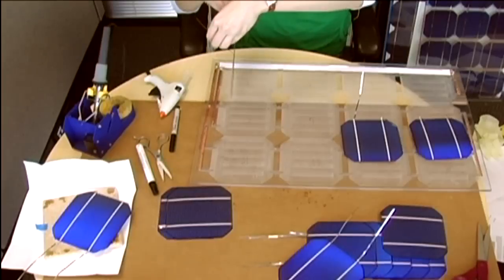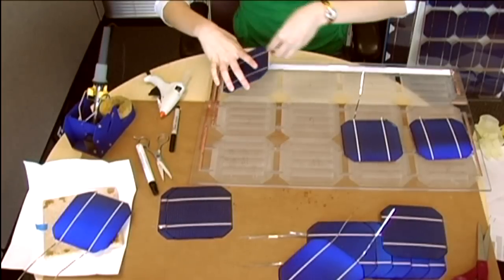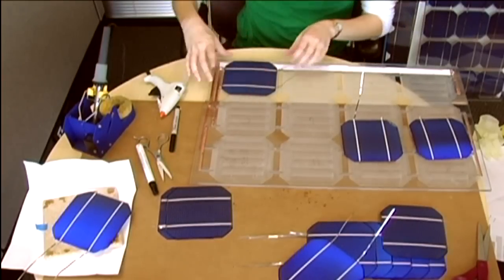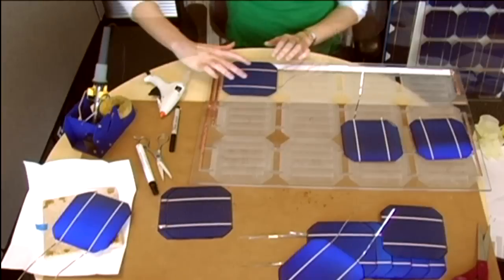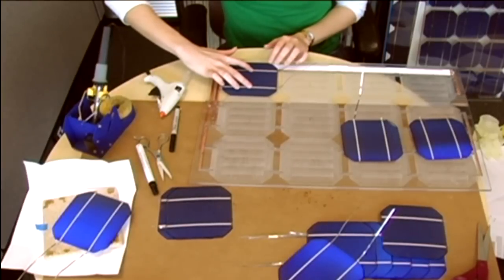Again, pick up the cell by the tabbing wire and place it in the cavity so the tabbing wire is facing to the left. Center it in the cavity and use two fingers to gently press down on the cell directly over the glue droplets.